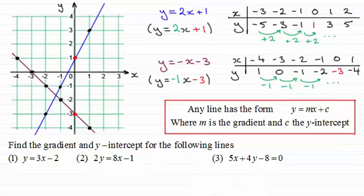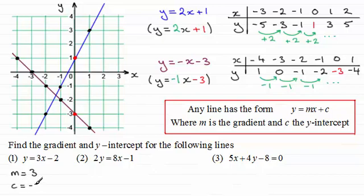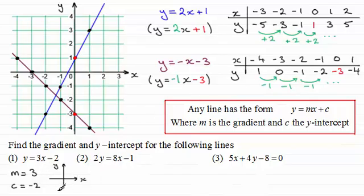Welcome back. For the first one, y equals 3x minus 2 — this is in the form y equals mx plus c. I can see that m, the number in front of x, is 3. So the gradient is 3. And the y-intercept, the c value, would be minus 2. If I had to sketch that line, I'd have my x-axis and y-axis, and it would cross the y-axis at minus 2 with a positive gradient of 3. That point where it crosses the y-axis would be at minus 2, and for every one across the line would rise 3 units.